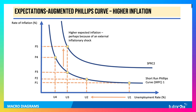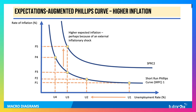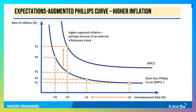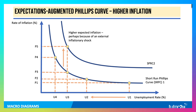There's also something called the expectations-augmented Phillips Curve, which you may have covered. Each short run Phillips Curve is drawn on the basis of a given expected rate of inflation, and if actual and expected inflation go up, then the Phillips Curve can shift higher. For example, taking the rate of unemployment U3, initially consistent with inflation of P3: if there's an inflationary shock — as we've seen in the living cost crisis recently — actual inflation goes up, people expect inflation to increase, and the Phillips Curve shifts so that unemployment of U3 is now associated with inflation of P5.